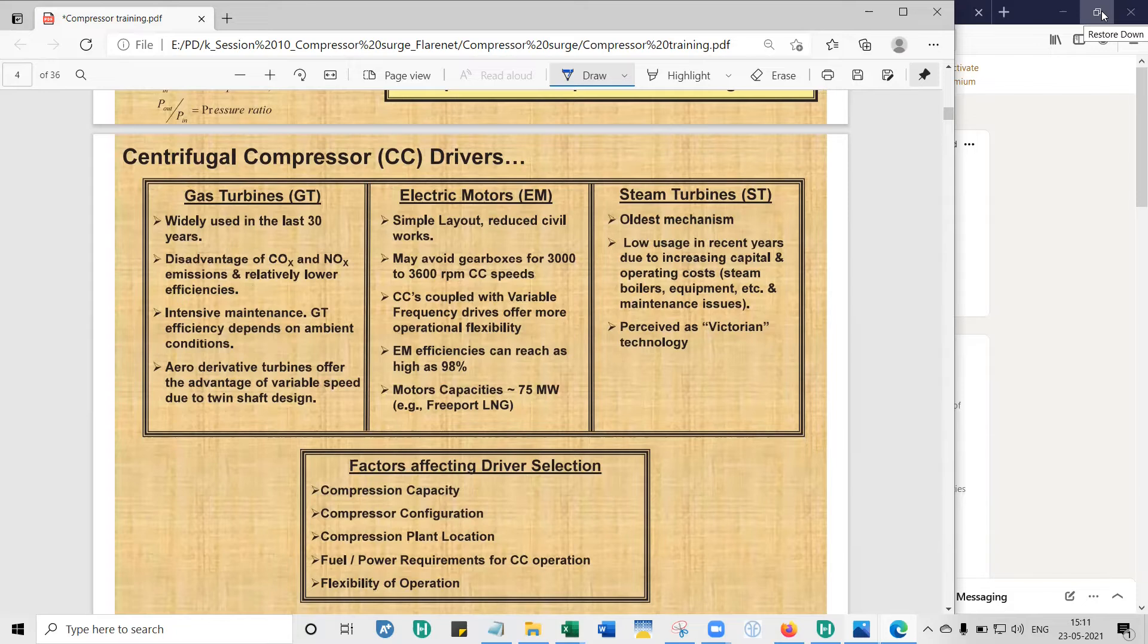So to summarize this slide, the way you choose a driver for a project depends on the compression capacity, the configuration plant location, the fuel requirements, and the flexibility of operation. Compressor capacity, which means that, let's say, for gas turbines, the best I know is an MS 9001 by GE General Electric. We say frame nine, and I think the ISO rating is about 130 megawatts. But let's say you have a situation where you need 200 megawatts of power. You can use a steam turbine. If it's 300 megawatts, definitely you'll have to use a steam turbine.